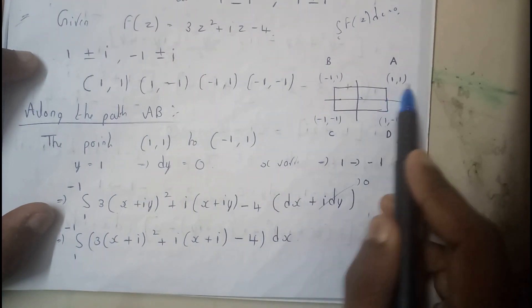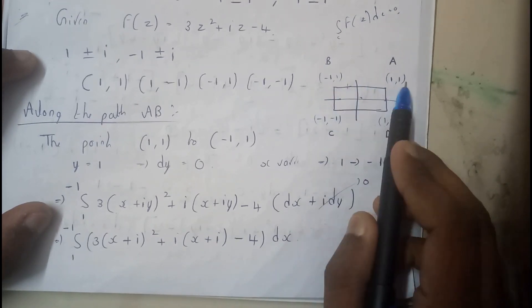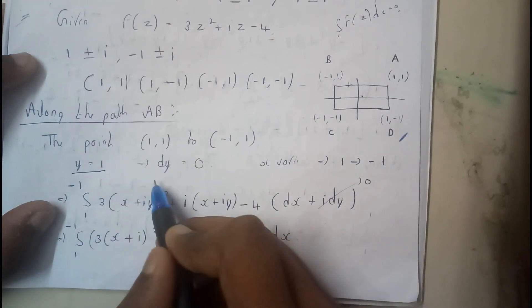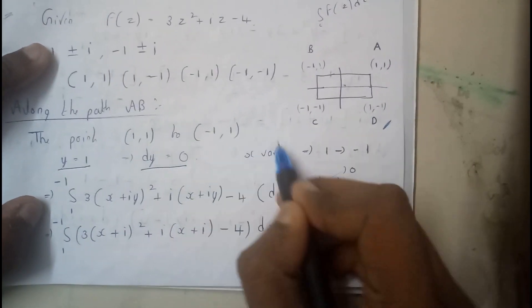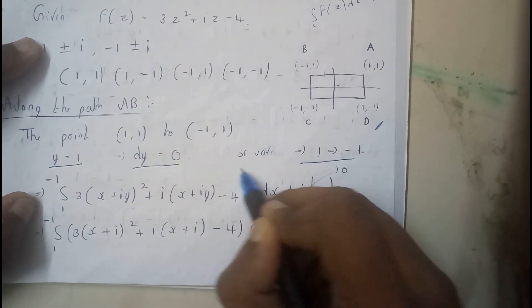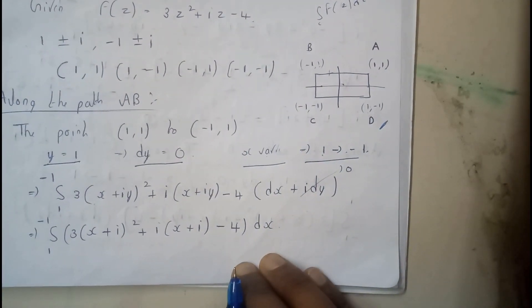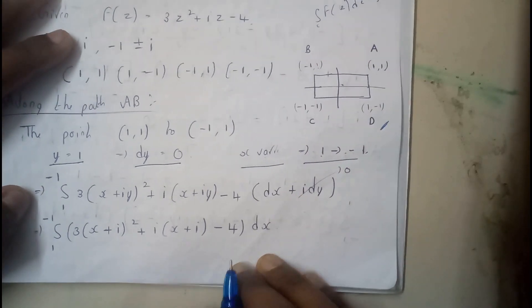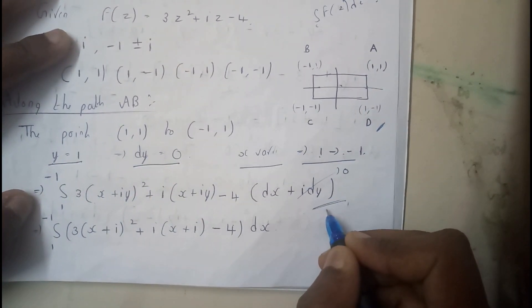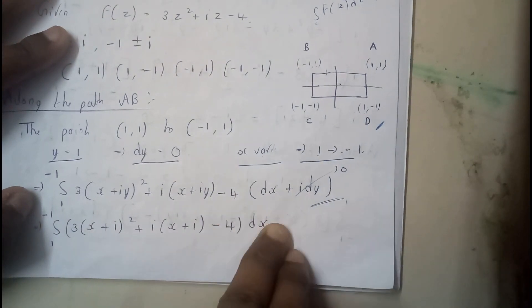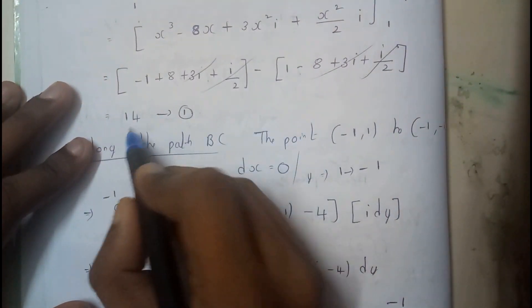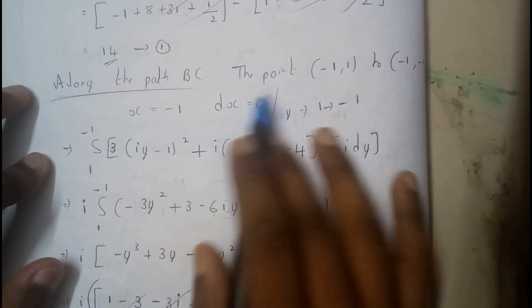Along path AB, between points (1,1) and (−1,1), y is constant: y = 1, so dy = 0, and x varies from 1 to −1. We convert the whole equation in terms of x, apply the limits, and perform the integration. The result for path AB is 14.